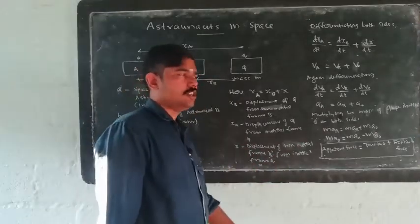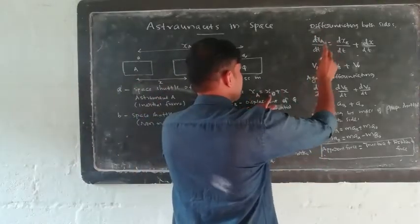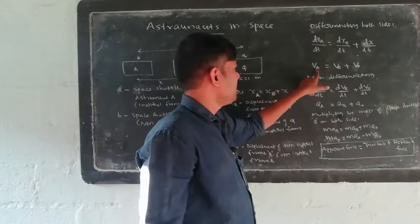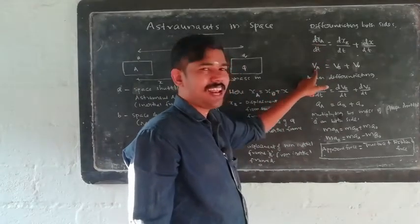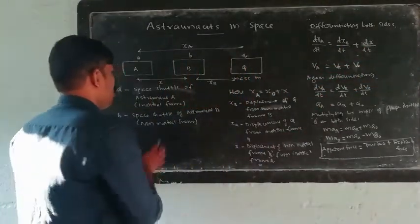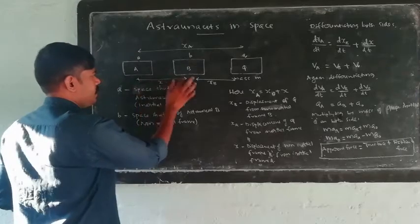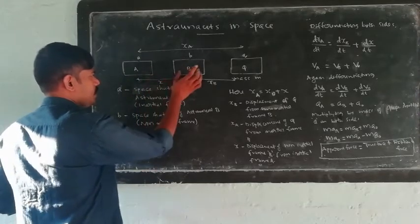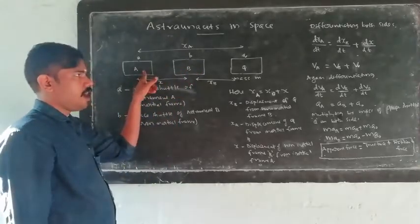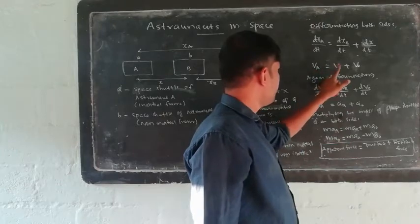So, x_a equals x_b plus x_0. Here, x_b is the displacement of Q from non-inertial frame B. x_a is the displacement of Q from inertial frame A. x_0 is the displacement of non-inertial frame B from inertial frame A. Now I am going to differentiate with respect to time. Left-hand side: dx_a by dt equals dx_b by dt plus dx_0 by dt. The rate of change of displacement is velocity. So, v_a equals v_b plus v_0, where v_0 is the velocity of the non-inertial frame with respect to the inertial frame.